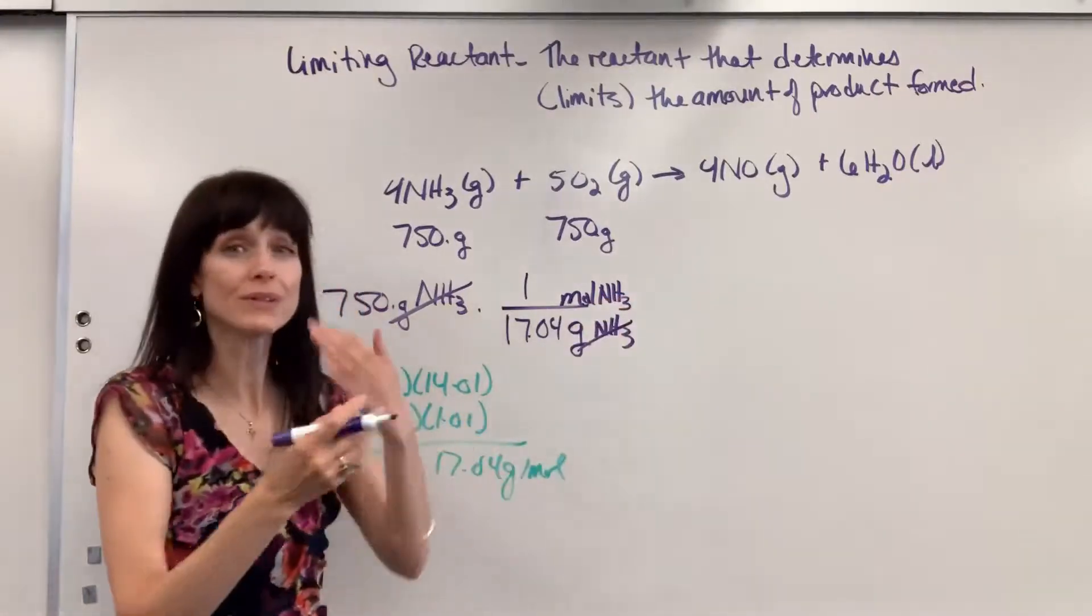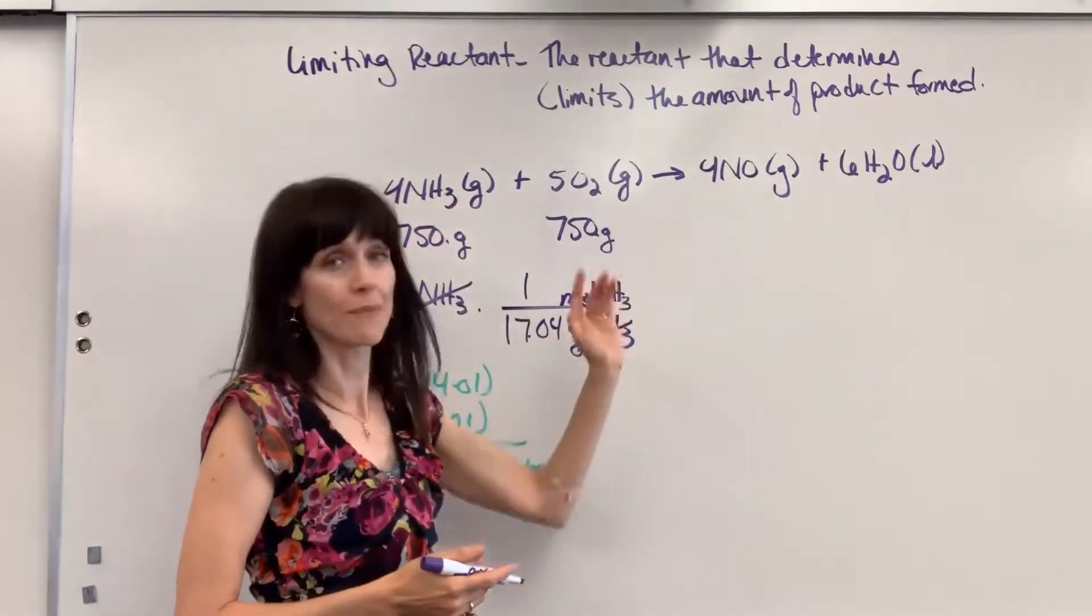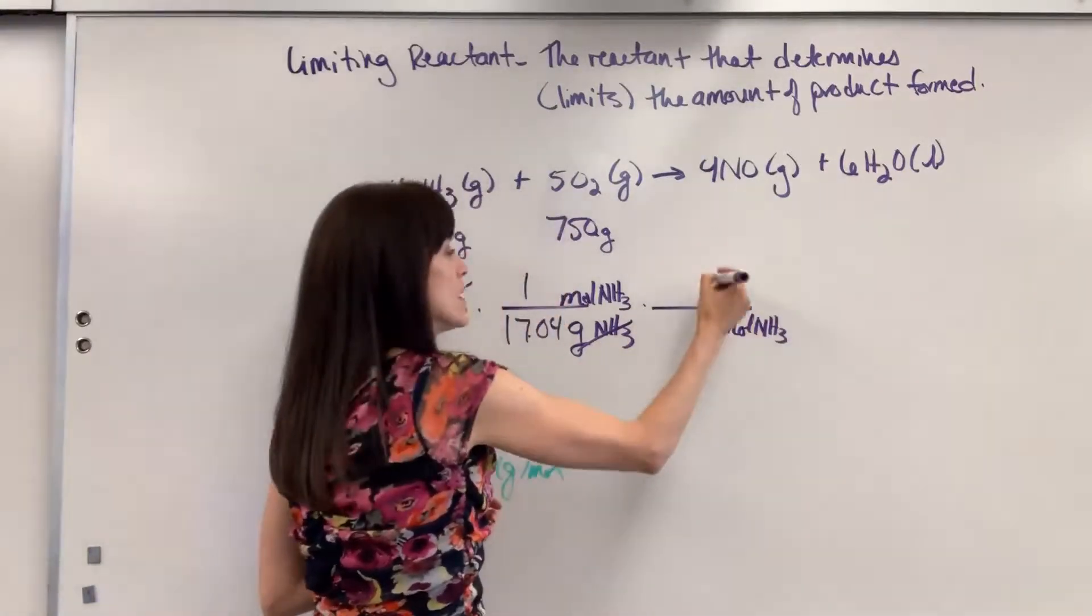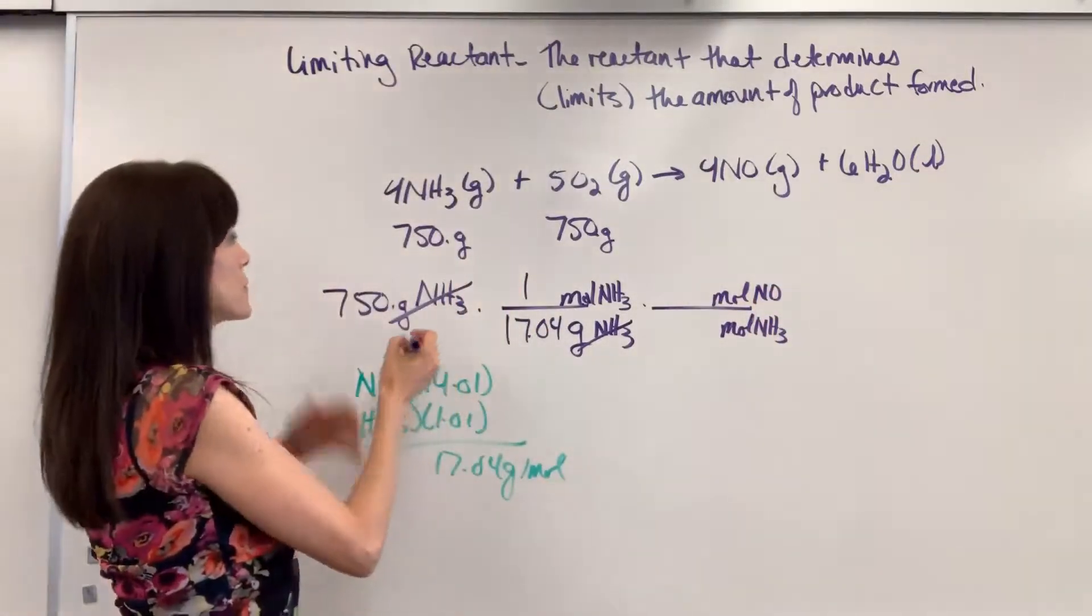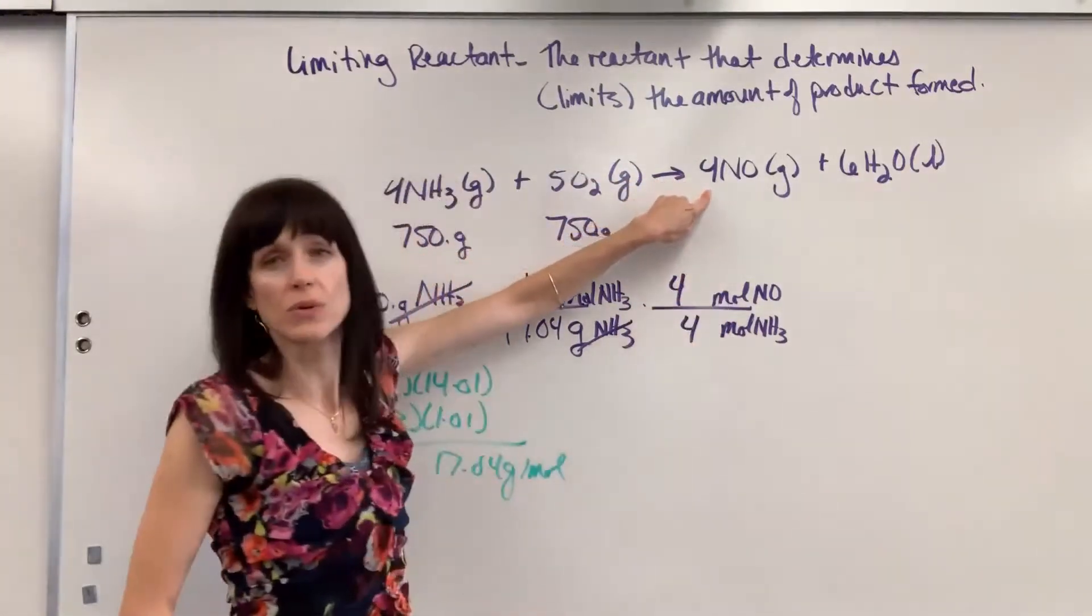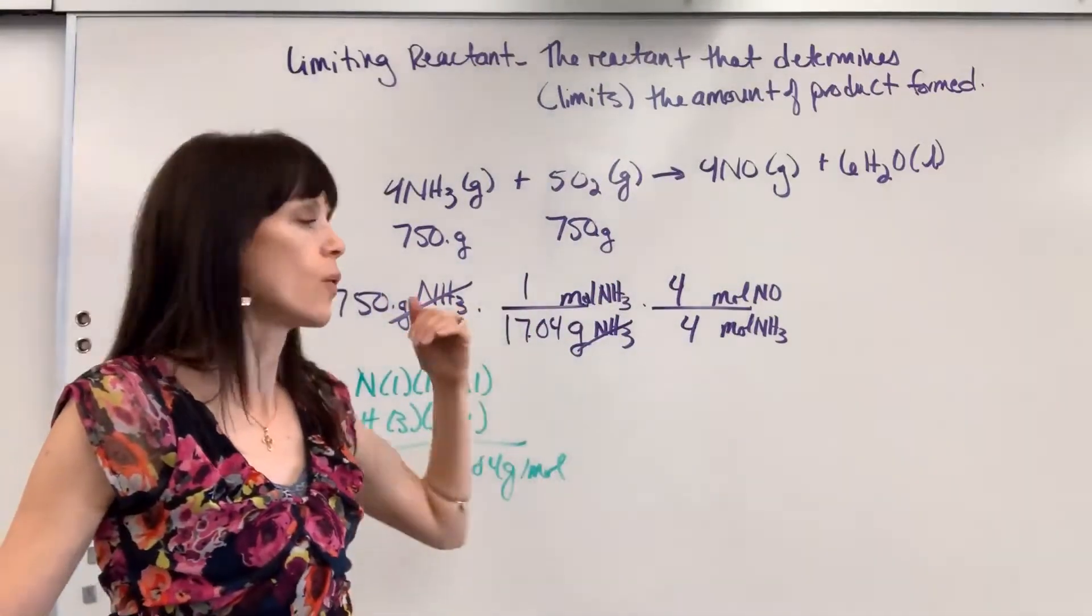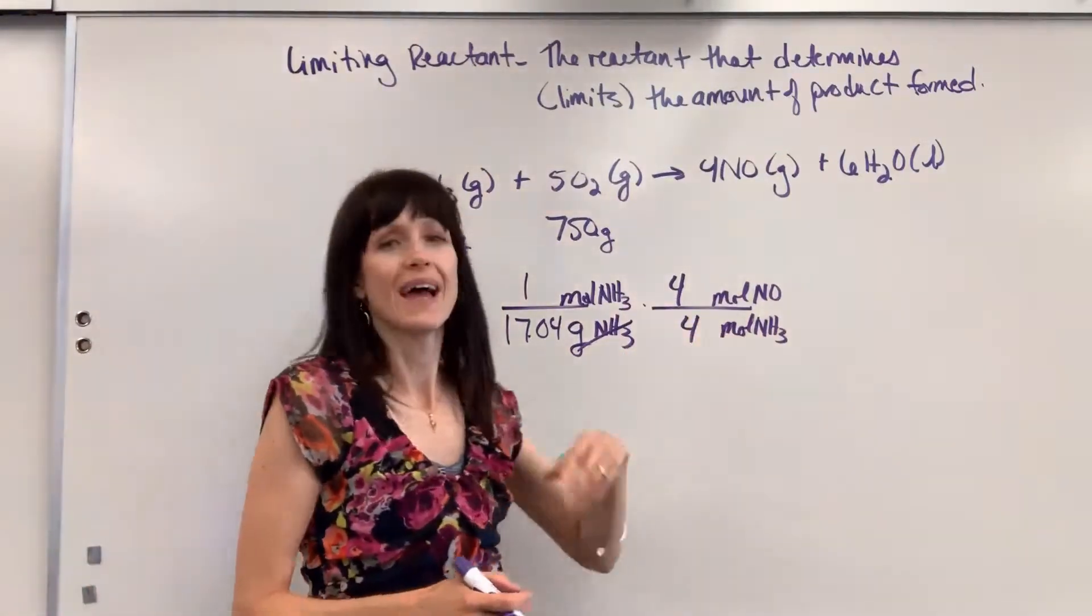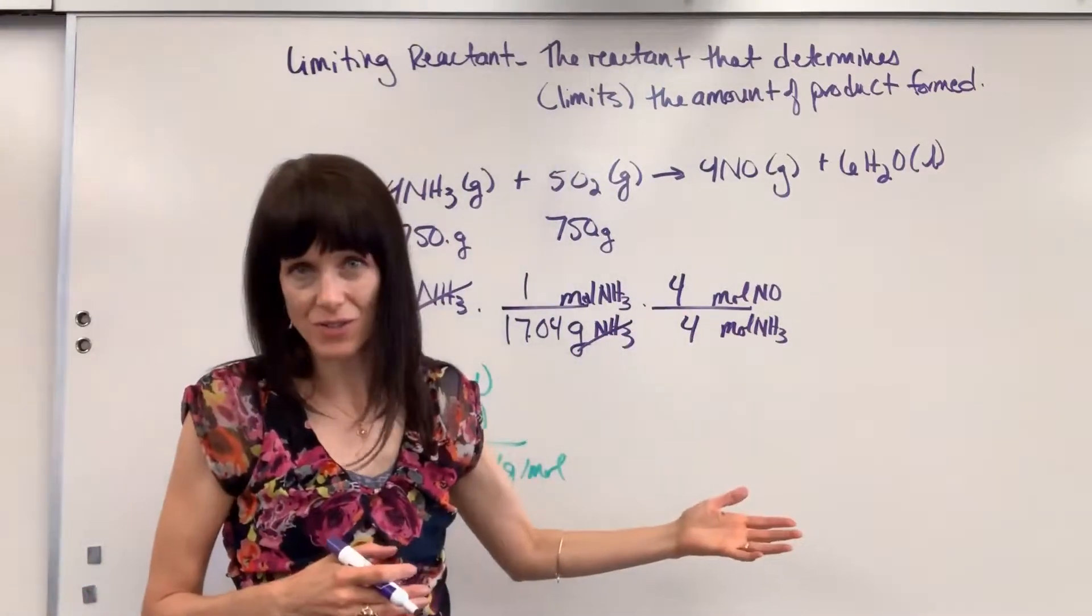Now we can go from moles of ammonia to moles of nitrogen monoxide. Walk that bridge from one compound to another one. So moles of ammonia go on the bottom, so they cancel. And I want moles of nitrogen monoxide. Those go on top. This is where we look at the molar coefficients. Four moles of ammonia are going to produce four moles of nitrogen monoxide. Okay, you could stop here if you want. I often go one more step because more often than not, the question wants how many grams are produced. So I go ahead and just bring it to grams right now so that I'll have the answer at the very end.